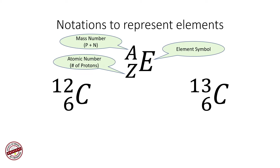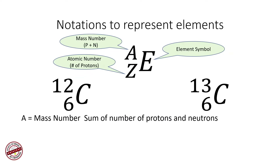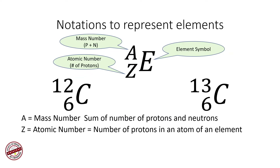Here are two examples: carbon-6-12 and carbon-6-13. Carbon has a mass number of 12 on the left and 13 on the right, but the atomic numbers are the same. As long as the atomic numbers remain the same, they are the same element, but the mass numbers are different. These elements are called isotopes.